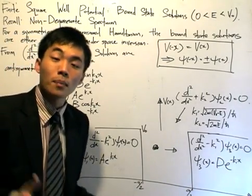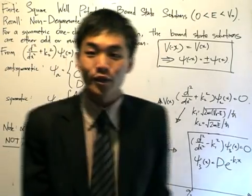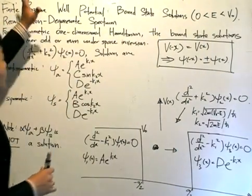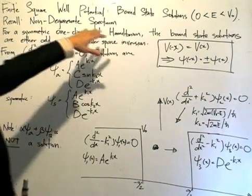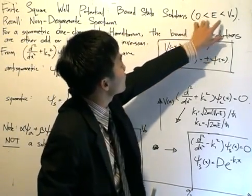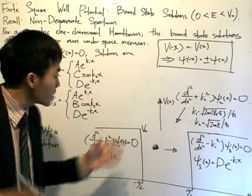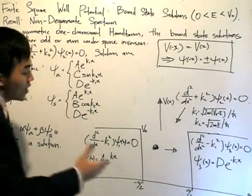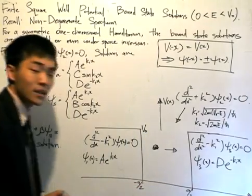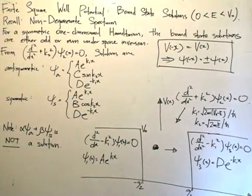We're back to the problem of the potential well, but this time we're going to look at the bound state solutions. The potential is the same — it's the finite square potential — and the bound state solutions occur when the energy of the particle is between 0 and V0. The potential is 0 in the region between minus A/2 to A/2, forming a well as you can see.